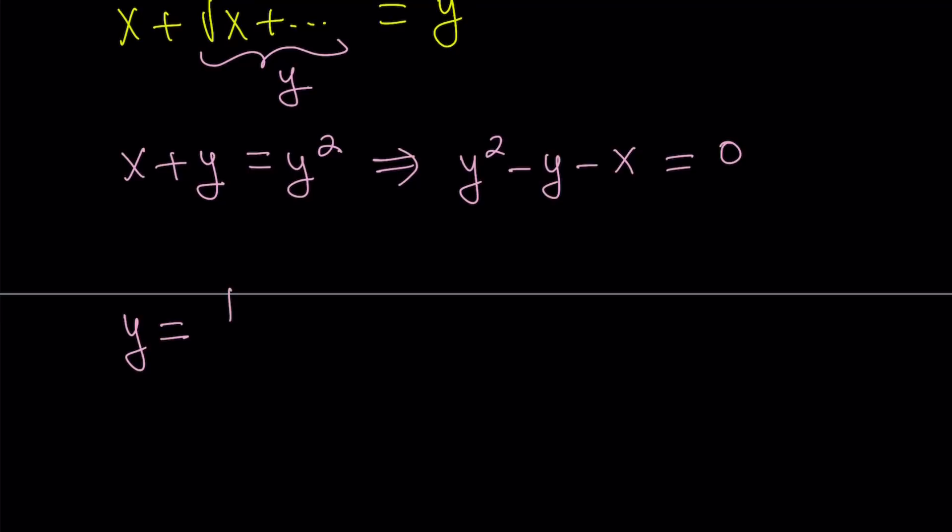So y equals negative b, which is 1, plus minus. But I'm going to write them separately. Plus, negative b, plus minus 2 squared. What was the formula? Okay, b squared minus 4ac. Okay, I just forgot the quadratic formula. b squared is 1, minus 4ac, minus minus. It's going to be plus 4x. Awesome.